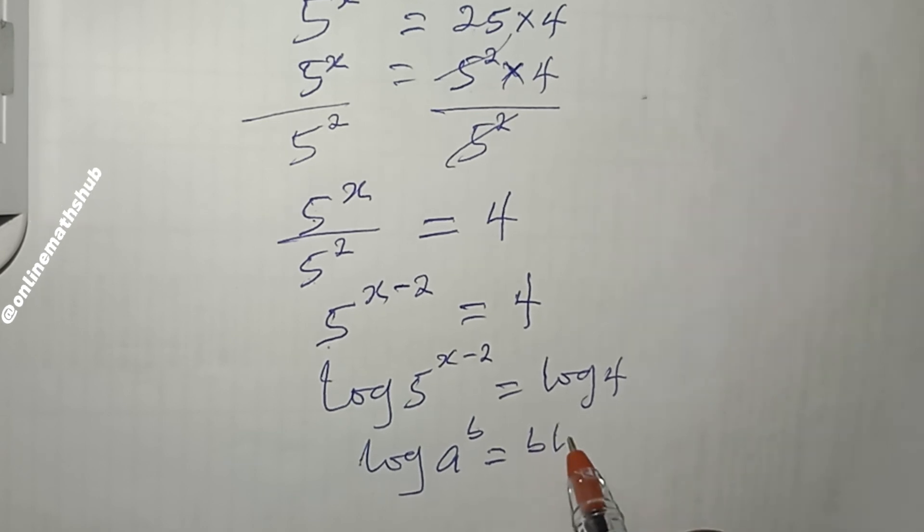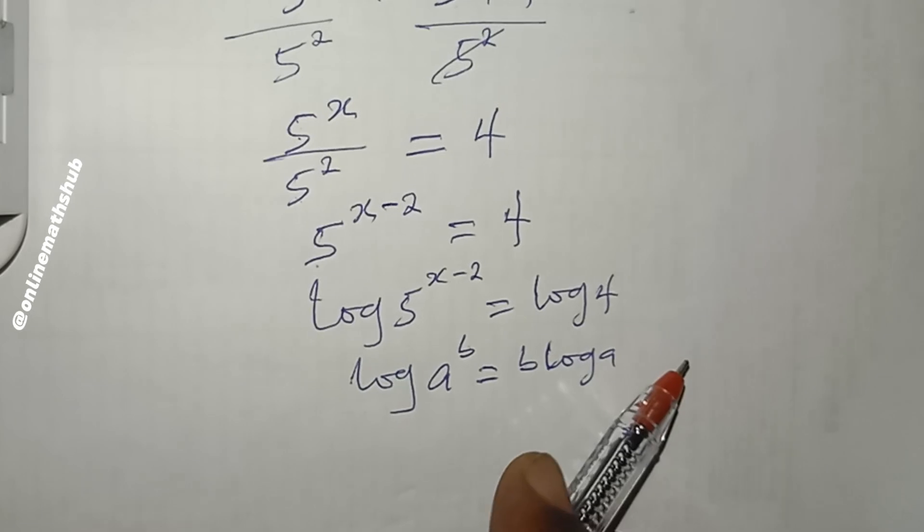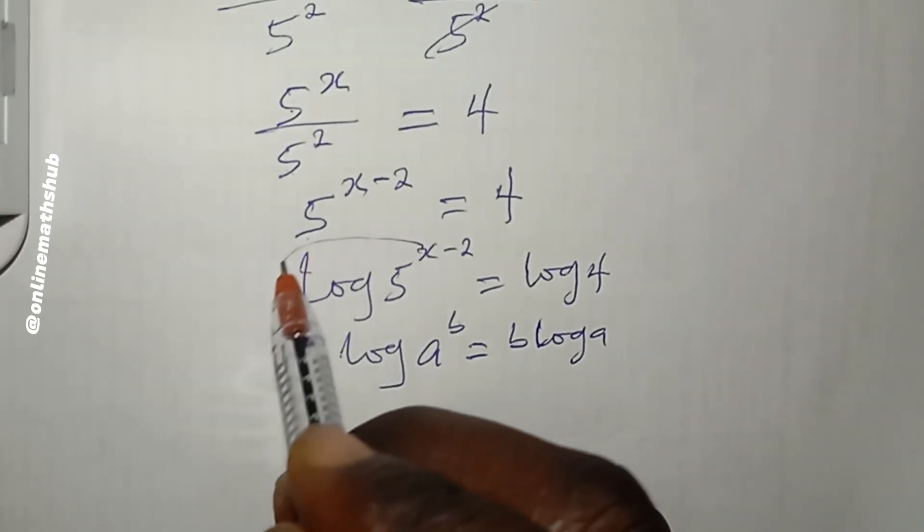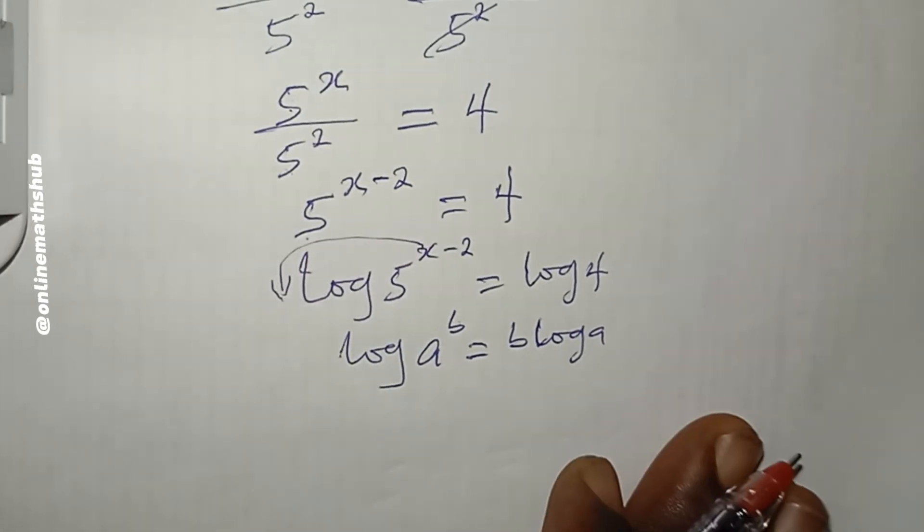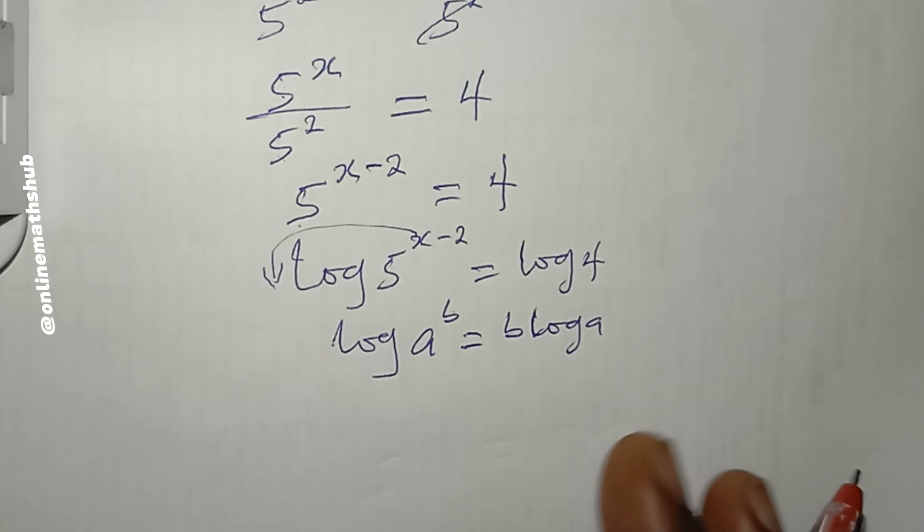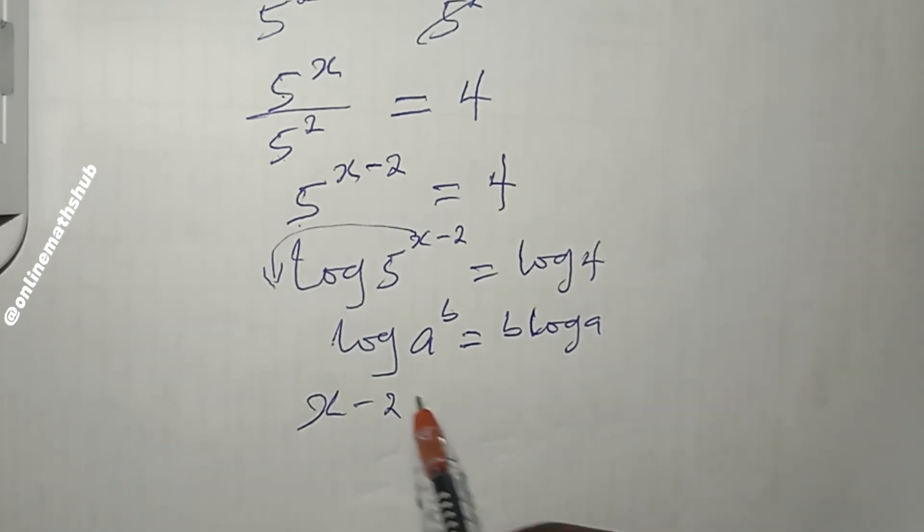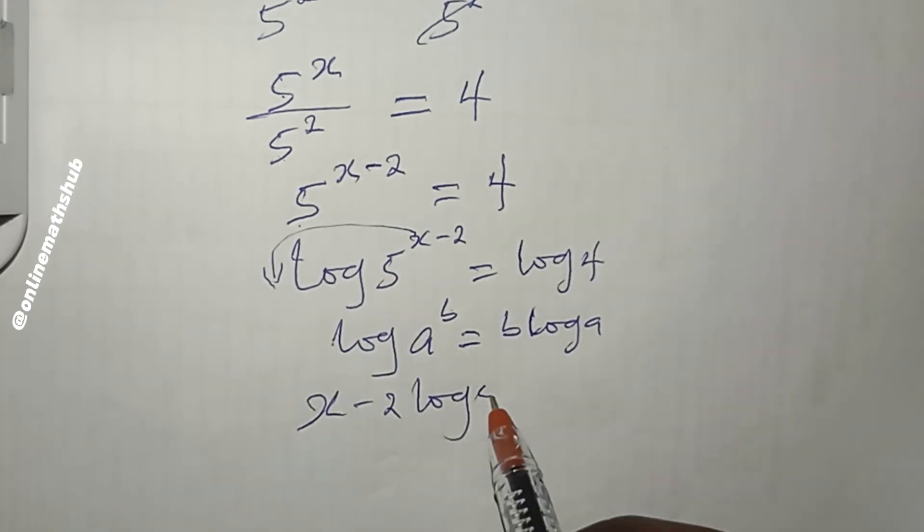If I utilize that here, I'm going to bring down this (x-2). So I have (x-2) × log(5) = log(4).